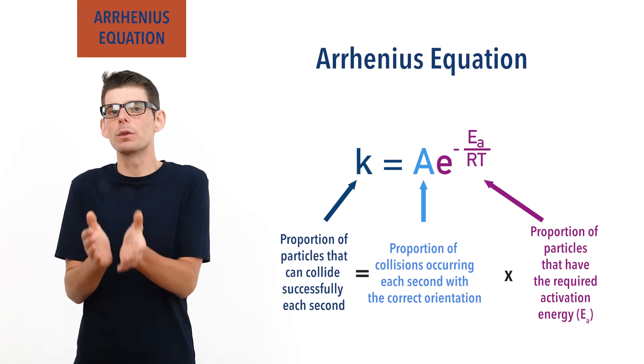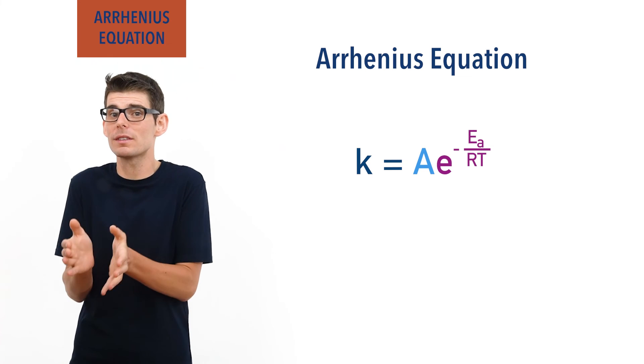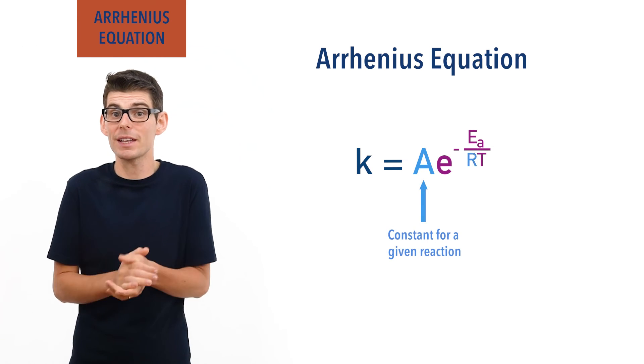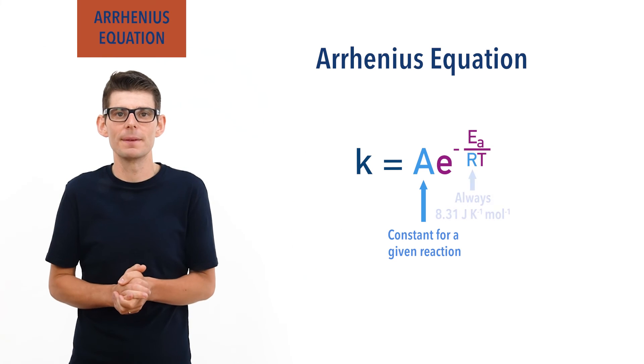At this level, the value of A, the Arrhenius constant, is pretty much always the same for a given reaction, and R, the gas constant, is just that - a constant, also always the same.